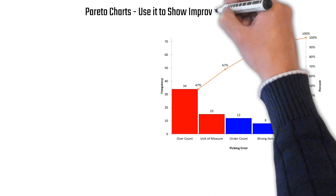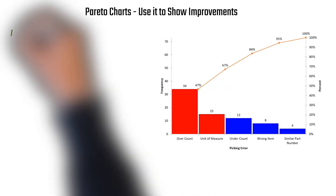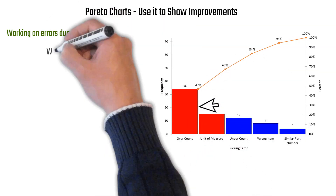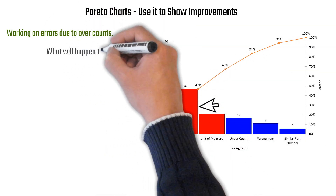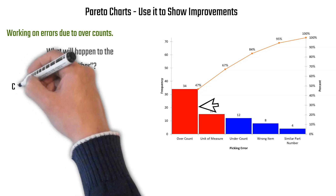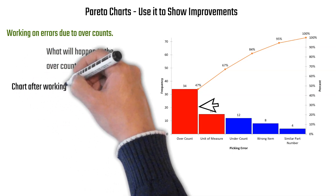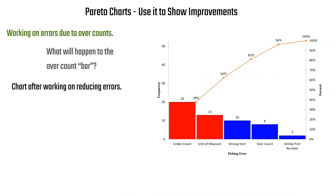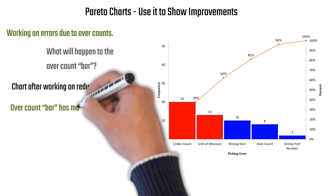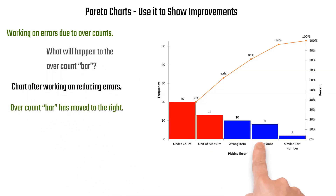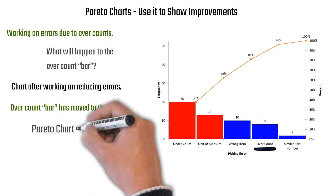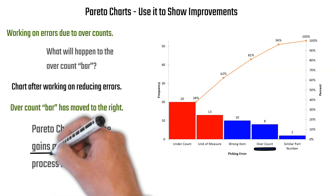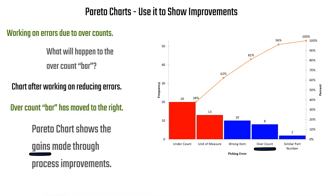Pareto charts can also be used to show improvements. After working on over count errors and redrawing the chart, you can see over count has moved to the right — it's now 8 compared to where it was at 34. The Pareto chart clearly shows the gains made through process improvements.